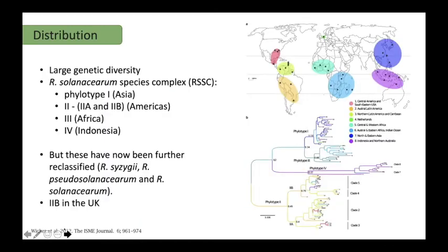Ralstonia solanacearum also has very large genetic diversity, which has been categorised into a species complex consisting of four phylotypes that can be evolutionarily traced back to different continents. This genetic diversity has been further reclassified into three different Ralstonia species: Ralstonia solanacearum, Pseudoralstonia solanacearum, and Candidatus Ralstonia solanacearum. In the UK it is predominantly the phylotype 2b strains, which are the group commonly affecting potato and tomato.